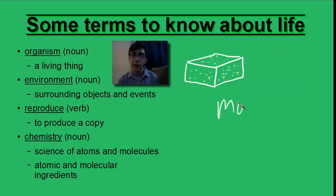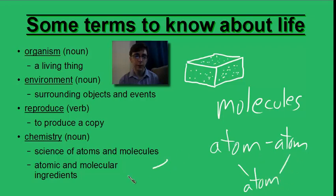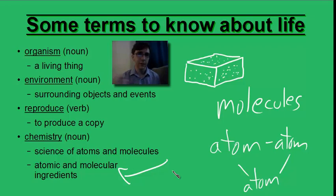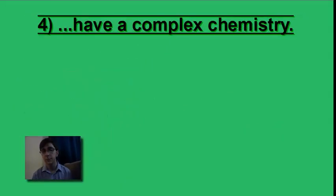Molecules are made of atoms. A molecule is more than one atom stuck together. Chemistry can also mean the atomic and molecular ingredients of an object. You might say this object has an interesting atomic and molecular makeup, or it has an interesting chemistry. And that brings us to our point: all living things have a complex chemistry.